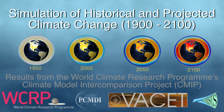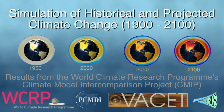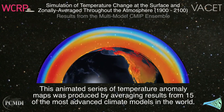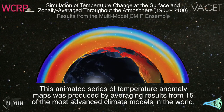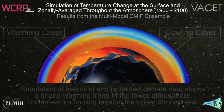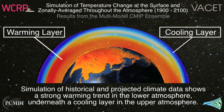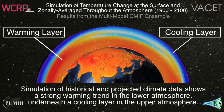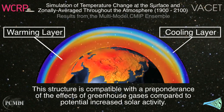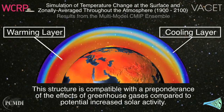Simulation of historical and projected climate change from 1900 to 2100. Results from the World Climate Research Program's Climate Model Intercomparison Project. This animated series of temperature anomaly maps was produced by averaging results from 15 of the most advanced climate models in the world. Simulation of historical and projected climate data shows a strong warming trend in the lower atmosphere, underneath a cooling layer in the upper atmosphere. This structure is compatible with the preponderance of the effects of greenhouse gases compared to the potential increased solar activity.